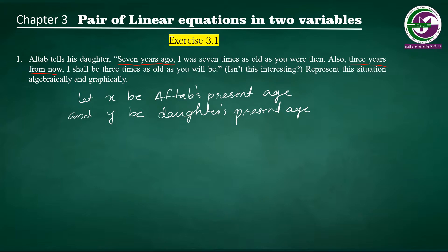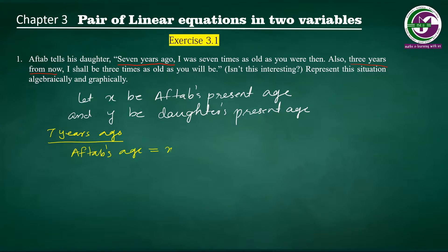We take the first relation from the question: 7 years ago, I was 7 times as old as you were then. Seven years ago means we subtract 7 from the present age. So Aftab's age 7 years ago equals x minus 7, and daughter's age 7 years ago equals y minus 7.